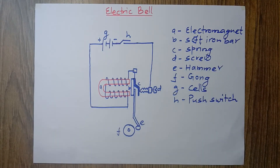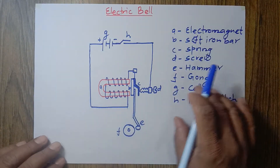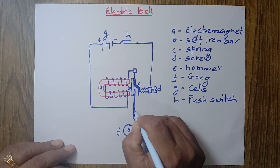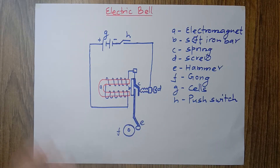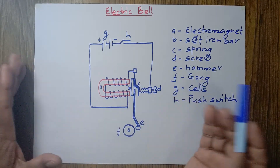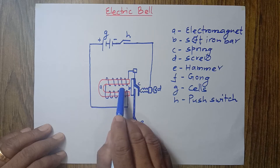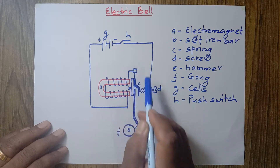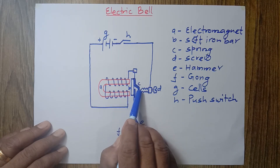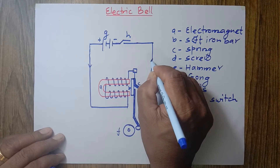If you are told to draw a diagram to show an electric bell, you can draw this. Now, how does it work? When we push the push switch, the circuit becomes complete. Electric current starts to flow from the positive terminal of the cell, goes to the electromagnet, comes out from the electromagnet, reaches the spring, then goes from the spring to the screw, from the screw to the push switch, and to the negative terminal. This way the electric circuit is completed.